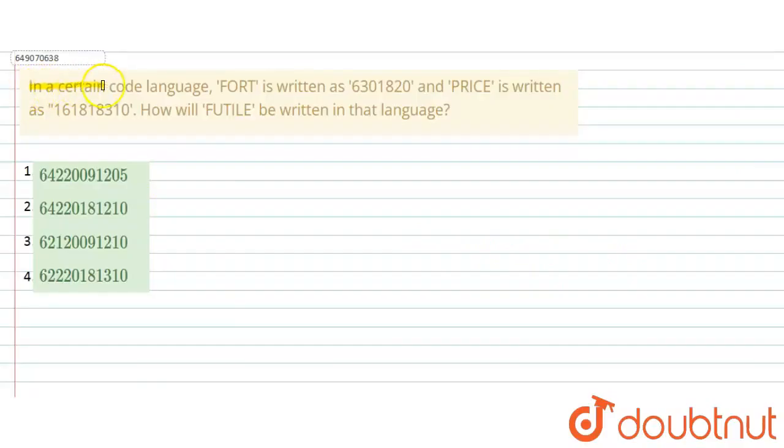The question says, in a certain code language, PORT is written as 6301820 and PRICE is written as 161818310. So, how will FUTILE be written in that language?